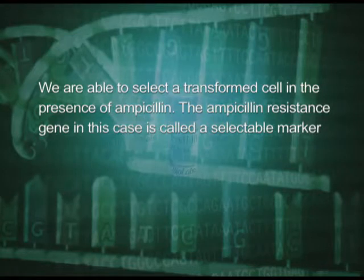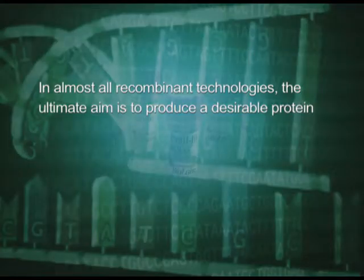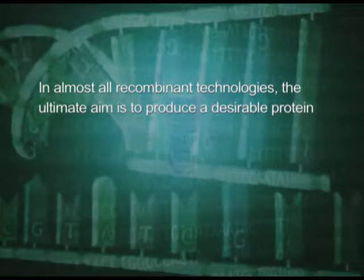Since due to the ampicillin resistance gene we are able to select a transformed cell in the presence of ampicillin, the ampicillin resistance gene in this case is called a selectable marker. The next process is obtaining the foreign gene product. When we insert a piece of alien DNA into a cloning vector and transfer it into a bacterial, plant, or animal cell, the alien DNA gets multiplied. In almost all recombinant technologies, the ultimate aim is to produce a desirable protein, hence there is a need for the recombinant DNA to be expressed. The foreign gene gets expressed under appropriate conditions.